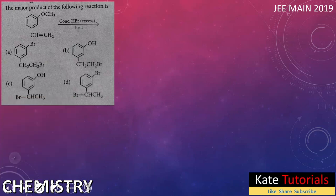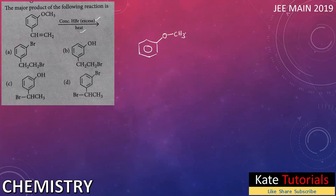Welcome to this video. This is a question from JEE — the major product formed in the following reaction. They have given a reaction with concentrated HBr in excess with heating. The molecule is anisole: a benzene ring with an O-CH3 group, and at the meta position there is a CH=CH2 group. We have to identify which product we get from options a, b, c, d.